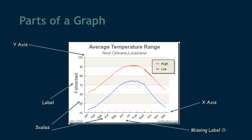For the scales, the numbers give us meaning for the temperature shown by each line. On the bottom, instead of numbers, we see the names of the months — still showing change over time. The title reads 'Average Temperature Range,' showing the average temperature in New Orleans, Louisiana. Finally, we have a key: the blue line shows the low temperature for each month and the red line shows the high temperature for each month in New Orleans.